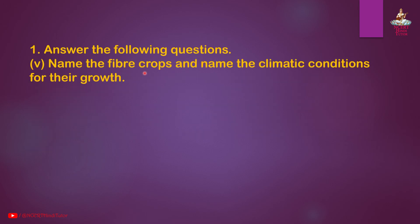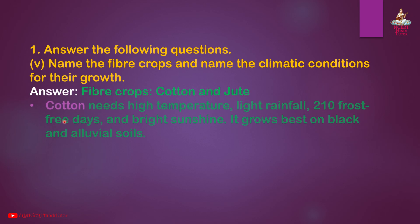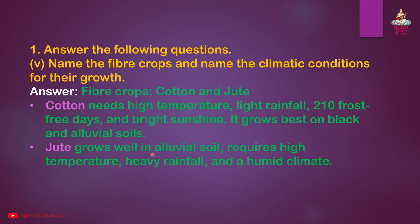Question 5: Name the fiber crops and the climatic conditions for their growth. Answer: Fiber crops are cotton and jute. Cotton needs high temperature, light rainfall, 210 frost-free days, and bright sunshine; it grows best on black and alluvial soils. Jute grows well in alluvial soil, requires high temperature, heavy rainfall, and a humid climate.